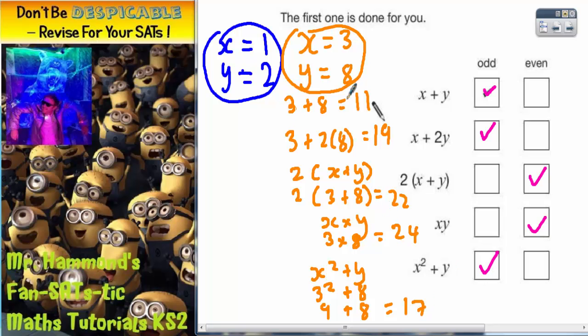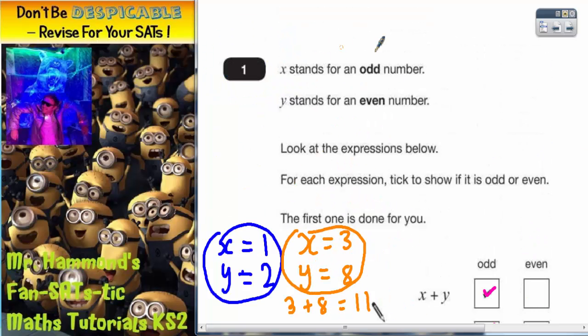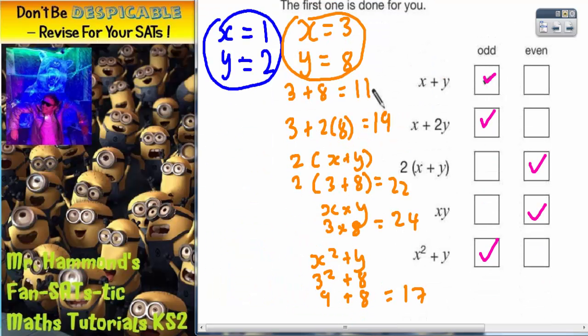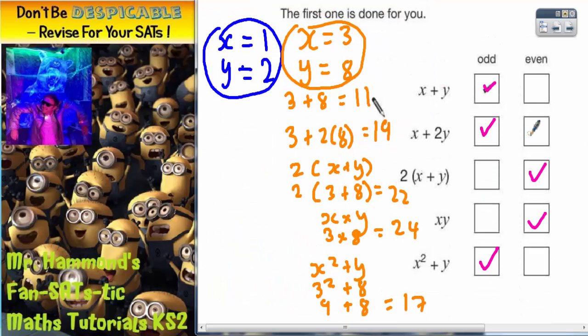So there you have it. There's the boxes that you need to tick. The first two are odd. The next two are even. And the final one's odd. The easiest way of doing it is to pick x for an odd number and pick an even number for y. Just like it says back in the question and work it out and see what you get. Do you get an odd answer or an even answer?